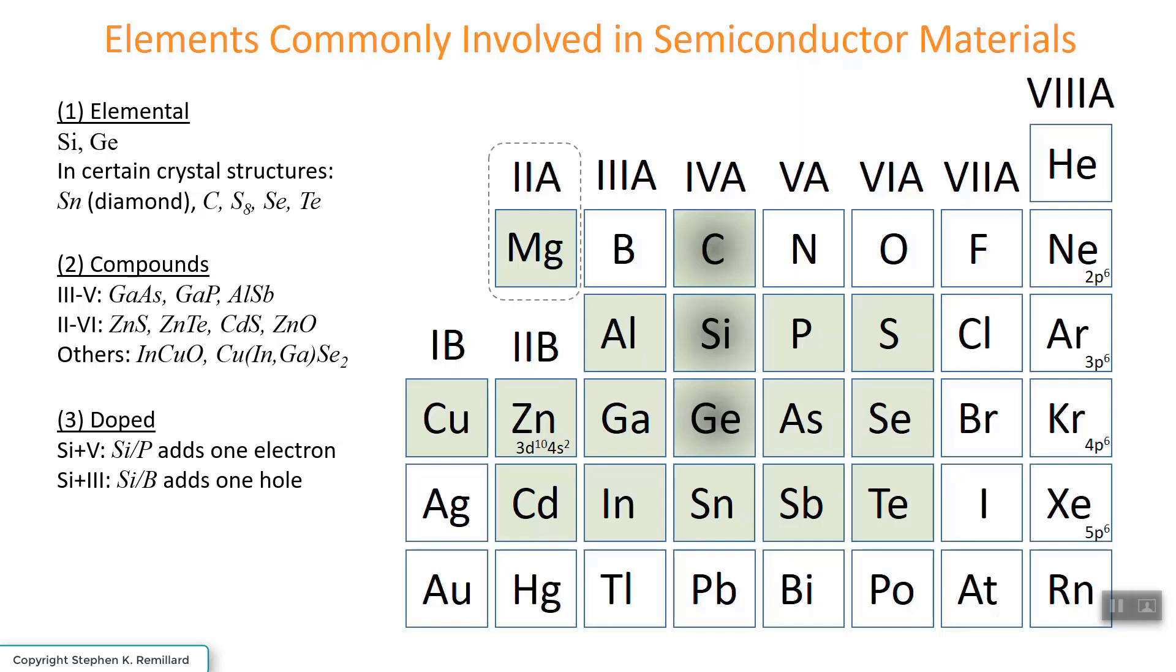What that does is that leaves some silicon atom without an electron. That's referred to as a hole, and those holes get passed around from silicon atom to silicon atom. They serve as charge carriers, even though what they are is the absence of a charge carrier.